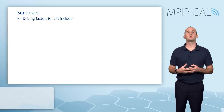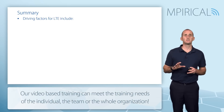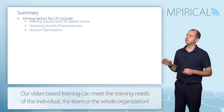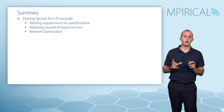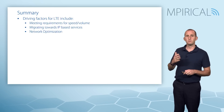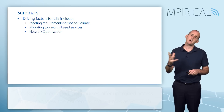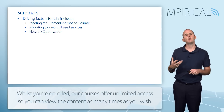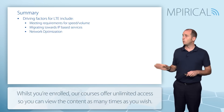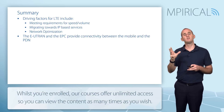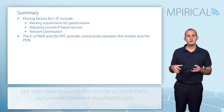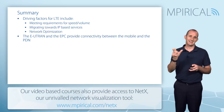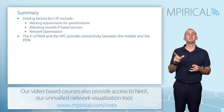In summary, we talked about the driving factors for LTE: accommodating the vast speed and volume requirements out there today, migration towards IP-based services, and network optimization. We also talked about the end-to-end architecture, which included the Evolved Universal Terrestrial Radio Access Network and the Evolved Packet Core, collectively providing connectivity to a packet data network — that connectivity being called an EPS Bearer.